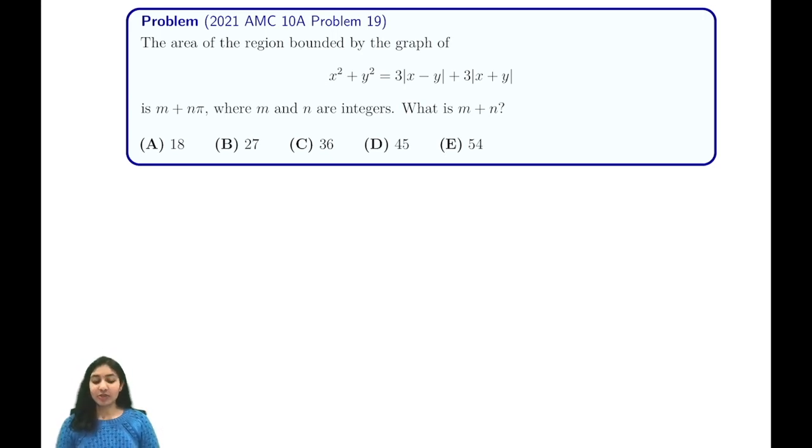Hi everyone, in today's video we're going to be going through 2021 AMC 10A problem number 19. It tells us that the area bounded by the graph of this complicated expression is m plus nπ, where m and n are integers, and we want to find m plus n.